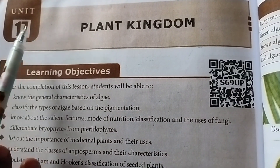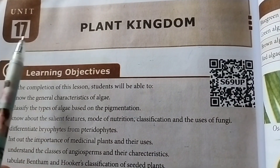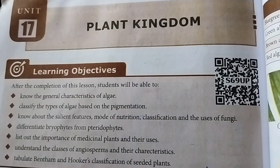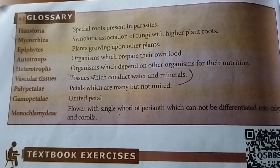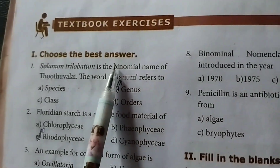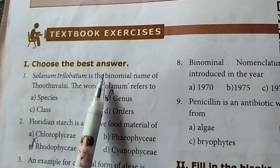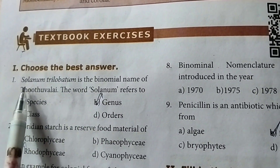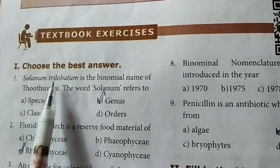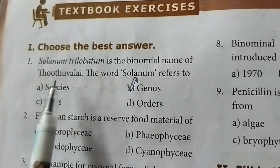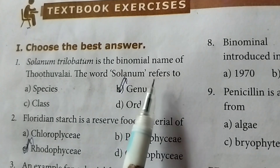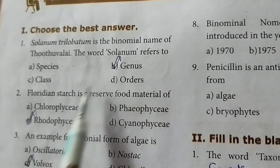Today we are going to see Unit 17 Science Plant Kingdom Book Pack Exercise. Take page number 202. Choose the best answer. First one: Solanum trilobatum is the binomial name of Thooduvalai. The word Solanum refers to genus.